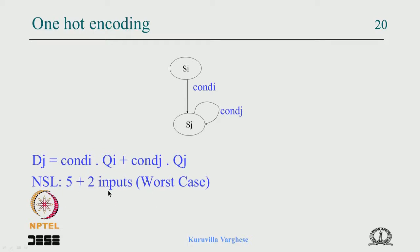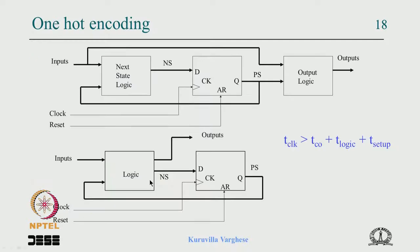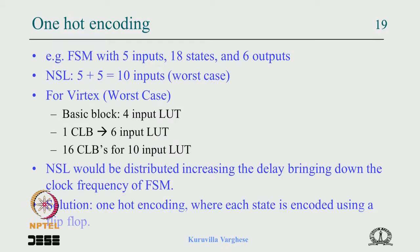With one-hot encoding, Moore-type outputs are often high in only one or two states, so the output logic becomes simply the Q output of a particular state, or an OR of multiple Q outputs. The output logic is just an OR of one or more flip-flop outputs, or taken directly for single-state outputs. This makes one-hot encoding faster than binary encoding not only for next-state logic but also for output logic.